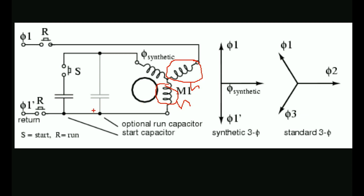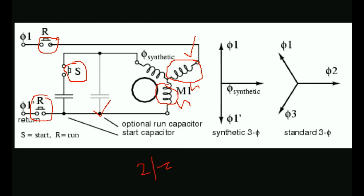If you have two phases, you can operate on two phases. If you have the first step, you can start the motor. If you want to release the motor, you will release the rotation. We will load the two windings with a total capacity of 2 by 3. If you want to do this, we will have an extra 30% capacity margin.